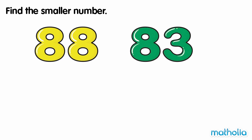Find the smaller number. We want to compare eighty-eight and eighty-three. Let's compare the digits in the tens place. Both numbers have eight tens. So we move on to compare the digits in the ones place. Eighty-eight has eight ones, and eighty-three has three ones.